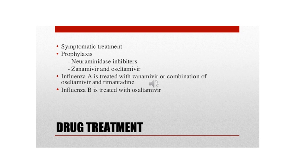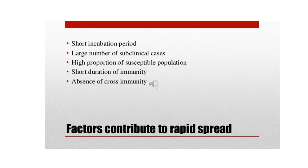The treatment of influenza is symptomatic. Prophylactic treatment uses neuraminidase inhibitors — zanamivir and oseltamivir. Influenza A is treated with oseltamivir and rimantadine. Influenza B is treated with oseltamivir. Factors that contribute to its rapid spread include short incubation period, large number of subclinical cases, high proportion of susceptible population, short duration of immunity, and absence of cross immunity between all influenza types.